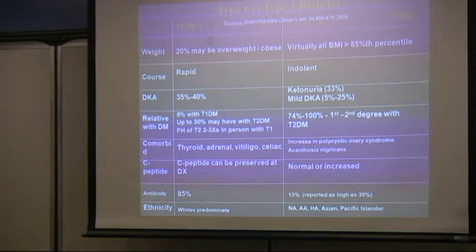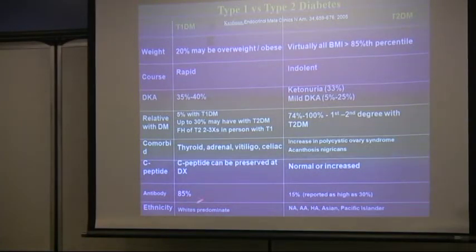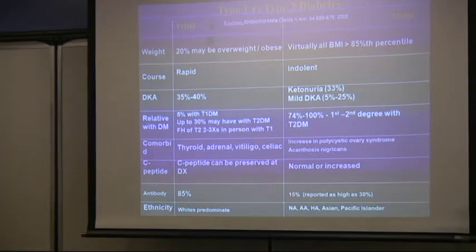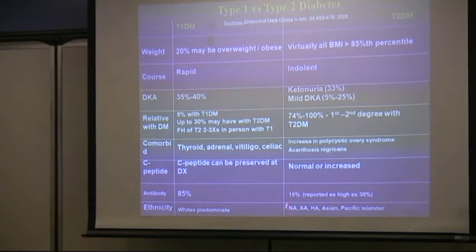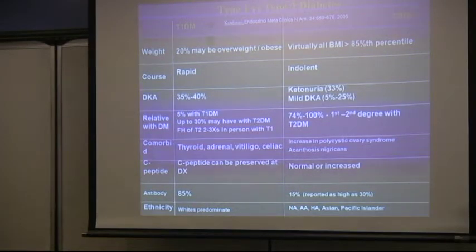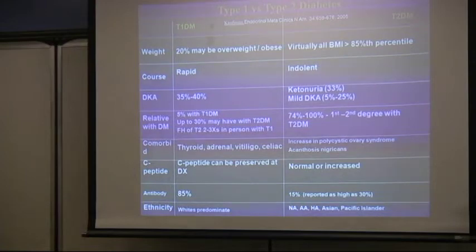In type 1, associated conditions include autoimmune problems such as thyroiditis, adrenal insufficiency, vitiligo, and celiac disease. C-peptide, a marker for insulin reserve in the pancreas, is usually low in type 1 — though not always at diagnosis — and typically normal or increased in type 2. Interestingly, antibodies such as GAD65 (glutamic acid decarboxylase 65) are well described in African-American patients with type 2 diabetes, and those patients may be managed with oral agents plus a small dose of long-acting insulin.